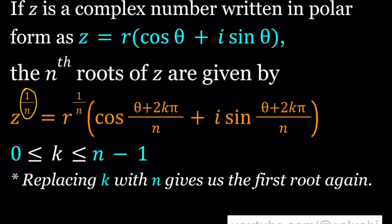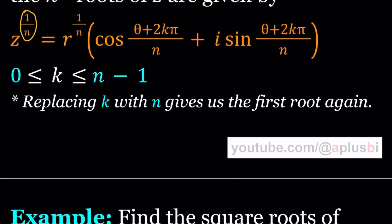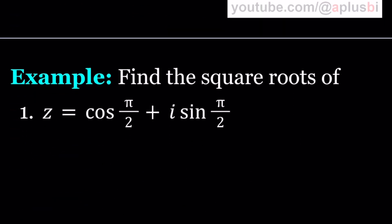Now, obviously, if you replace k with n at the end, you're going to go back to the first root. So we only go up to n minus 1, and that gives us n roots. Let's go ahead and take a look at an example and see how this works. I'll show you with an example the best way to understand this.